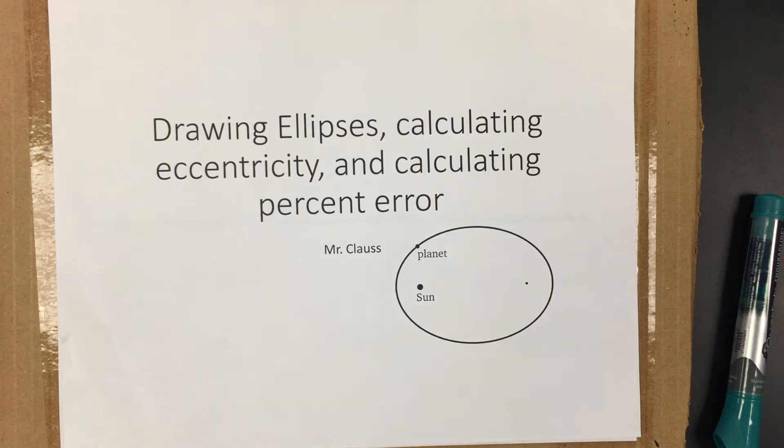Hi everybody, this is Mr. Claus and this is a quick review on drawing ellipses, calculating their eccentricity, and calculating your percent error or how far off your number was. This is important because the planets follow an elliptical orbit around the Sun.